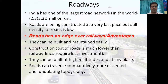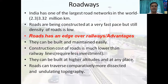The first one is roadways. India has one of the largest road networks in the world, at about 3.32 million kilometers. Roads are being constructed at a very fast pace, but still the density of roads is low. Roads have an edge over railways. They can be built and maintained very easily. The construction cost of a road is much lower than a railway line.